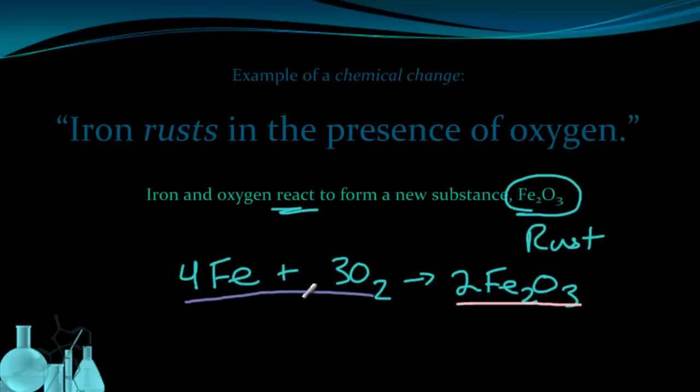Now you'll notice that all of these substances, the iron, the oxygen, and the rust, are all represented by chemical formulas. Fe, O2, Fe2O3, these are all chemical formulas. So let's take a closer look at what a chemical formula is made up of and what information it gives us.